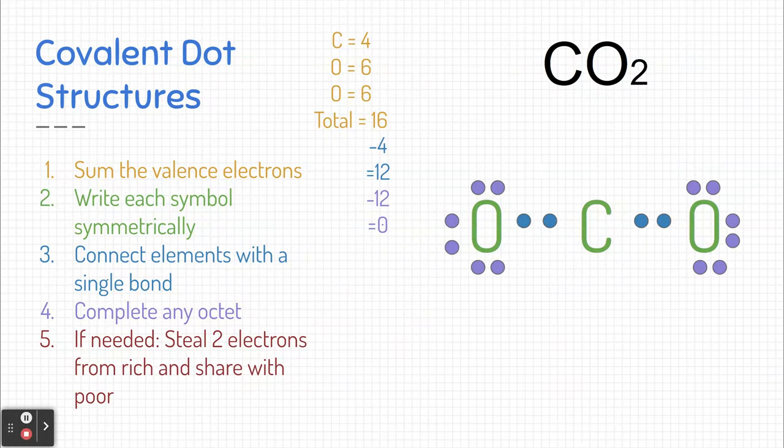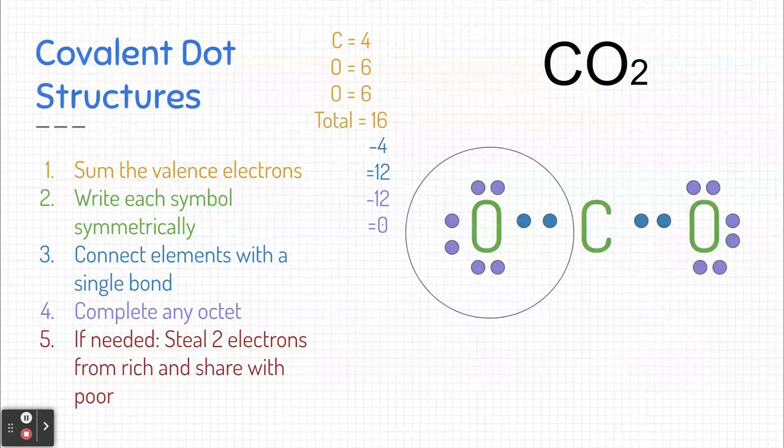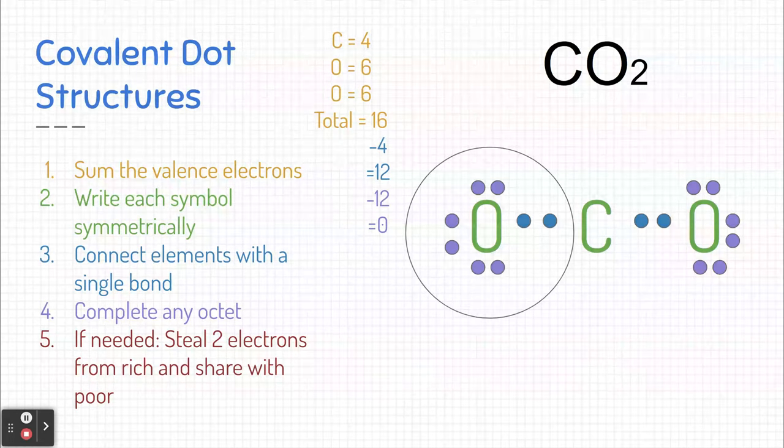So let's check to see if we have any completed octet. I'm going to go ahead and draw a circle or a Venn diagram around each of the elements. If you take a look at this oxygen, this oxygen has a full octet. It has 2, 4, 6 non-bonding electrons. That's the purple ones. And it has two bonding electrons. That's the one between oxygen and carbon.